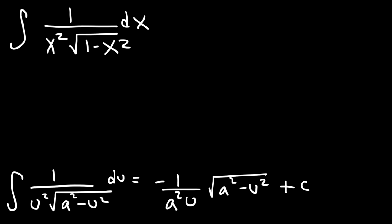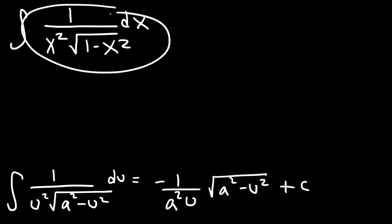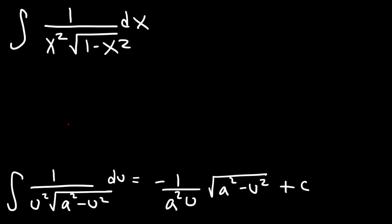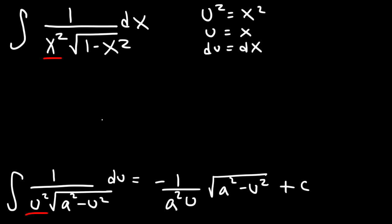We need to convert this expression into one that contains the u variable. We can clearly see that x squared and u squared are the same. So if u squared equals x squared, then u equals x and du equals dx. We can also see that a squared is 1 squared, so a is 1.